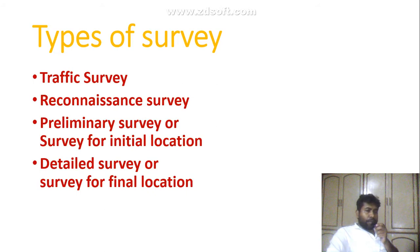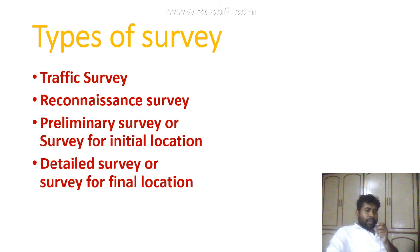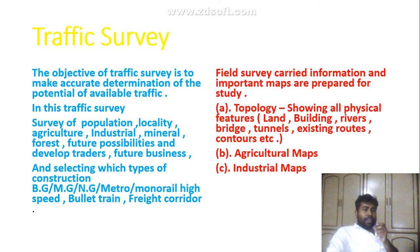Next I will discuss the types of survey — how many types of survey exist in projects related to signaling, railway, and metro. There are four types of survey: first, traffic survey; second, reconnaissance survey; third, preliminary survey, which is a survey of initial locations; and fourth, detail survey, which is a survey for final locations.